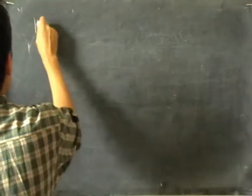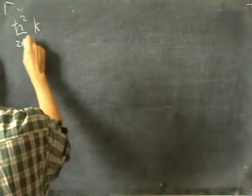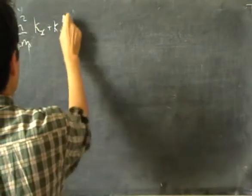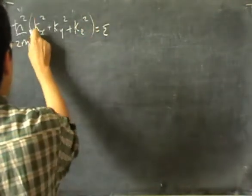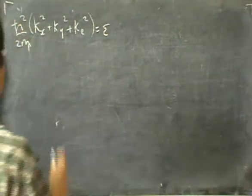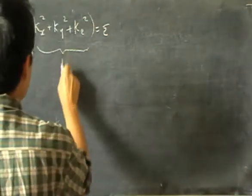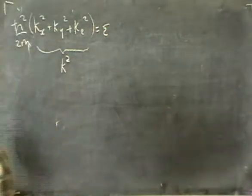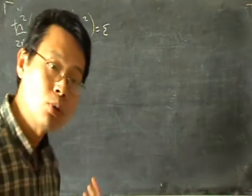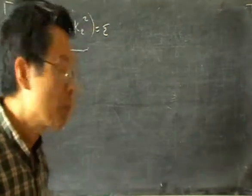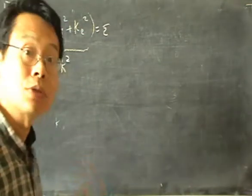Let's start with this formula: ħ²/2m times (k_x² + k_y² + k_z²) = energy. The expression k_x² + k_y² + k_z² is often written as k². So if we let this be k², we can make use of what we know about the equation of a sphere to get an idea of how these states are distributed in a three-dimensional space.